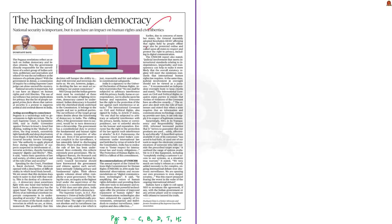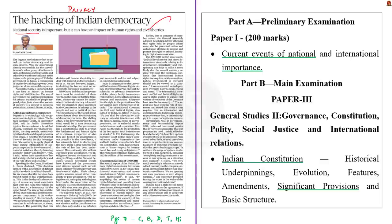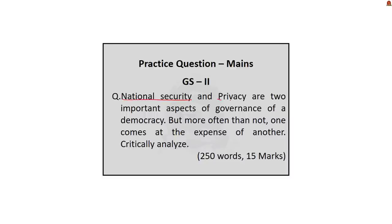This editorial article debates between national security and privacy. Our primary focus will be on debating between these two aspects, and the entire discussion is going to be more in the perspective of mains. Usually in mains, a question pitching national security against privacy is a potential area. The question goes like this: 'National security and privacy are two important aspects of governance of a democracy, but more often than not one comes at the expense of another. Critically analyze.'